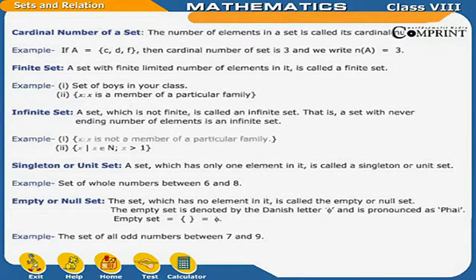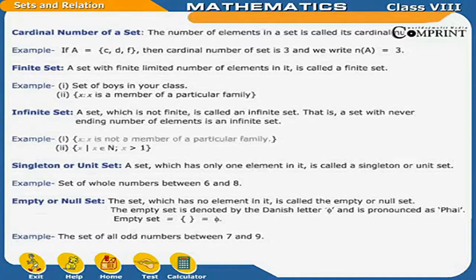Cardinal number of a set: the number of elements in a set is called its cardinal number. For example, if A = {C, D, F}, then the cardinal number of the set is 3, written as n(A) = 3.